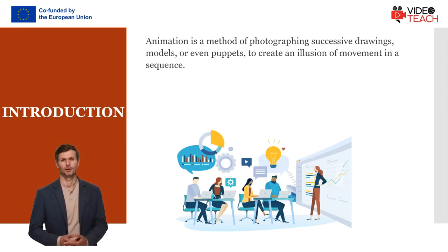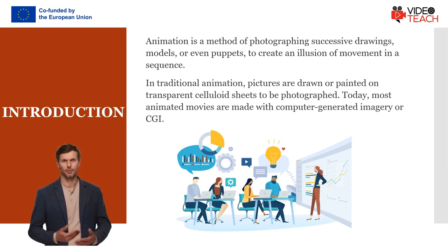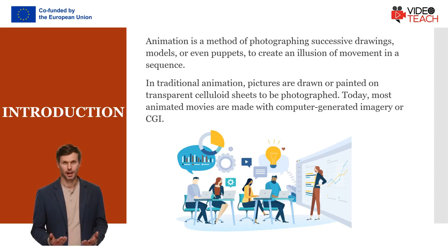When multiple images appear in fast succession, the brain blends them into a single moving image. In traditional animation, pictures are drawn or painted on transparent celluloid sheets to be photographed — early cartoons are examples of this.